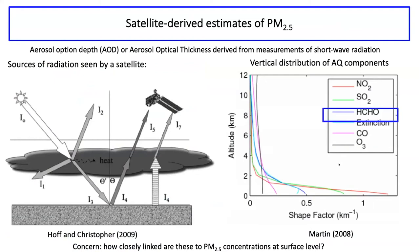At global scale, remote sensing measurements have played a big part in helping us understand concentration estimates in different parts of the world. I want to cover how we get information from satellites. On the left is a schematic of what a satellite sees when measuring shortwave radiances to compute aerosol optical depth (AOD), sometimes called aerosol optical thickness. It measures shortwave radiation coming from the Earth — radiation from the Sun that may be scattered off clouds or aerosols, reflected off the Earth's surface, and then interacting with clouds and aerosols before reaching the satellite.